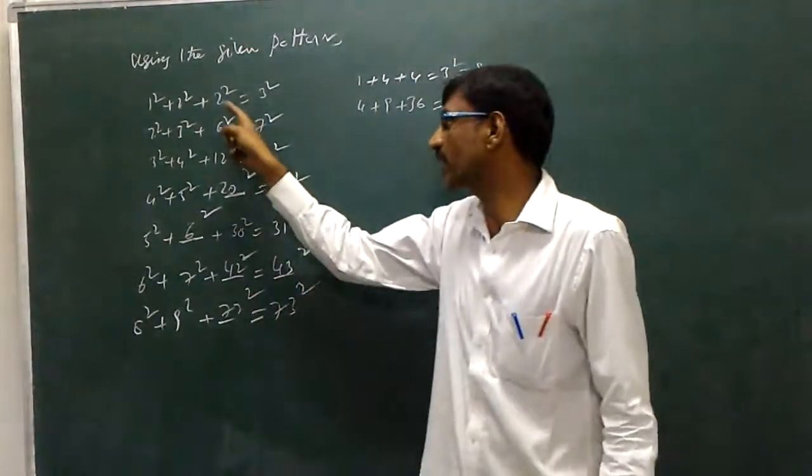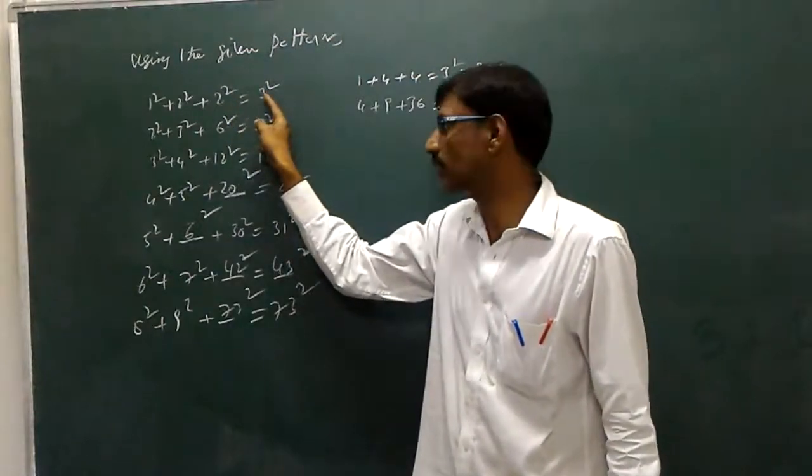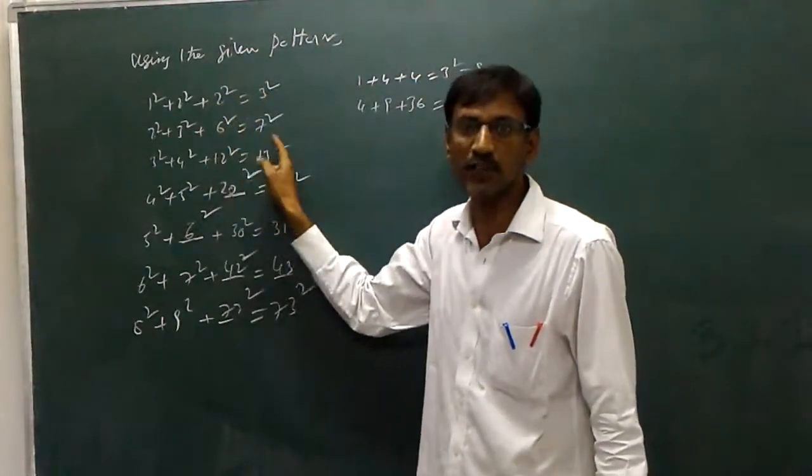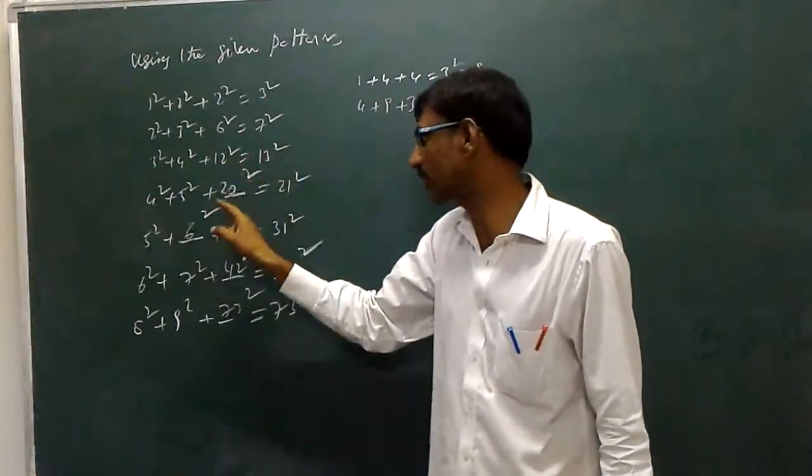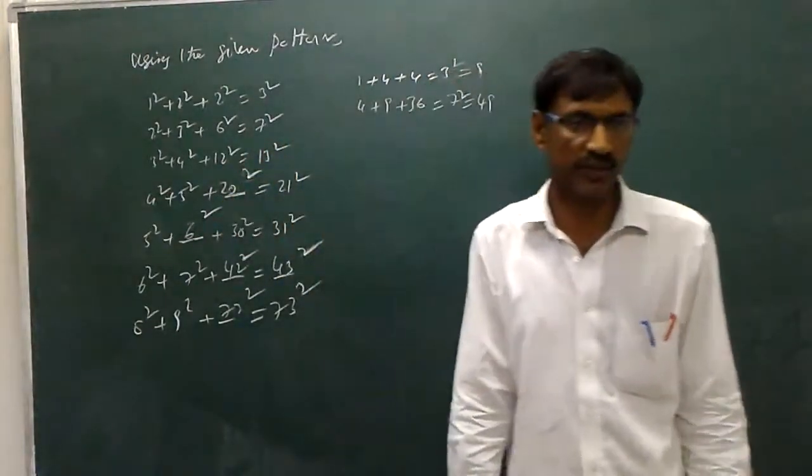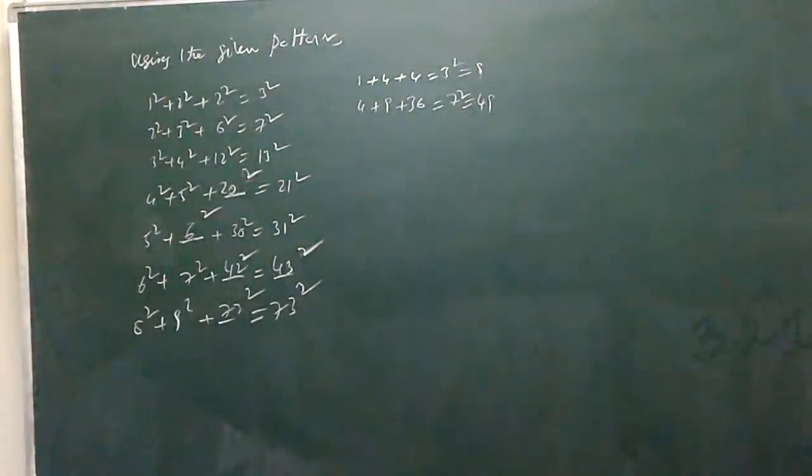And here, listen. Two square and two plus one whole square. Six is six plus one whole square, that is nothing but seven square. Twelve plus one, thirteen square. Twenty plus one, twenty-one square. Like that. That is the pattern given.